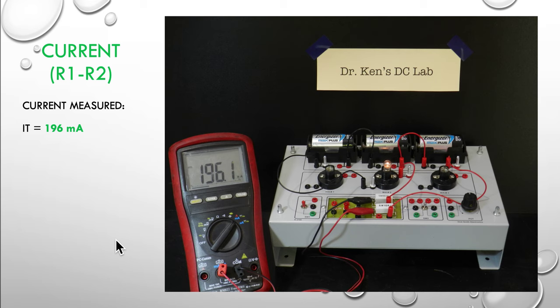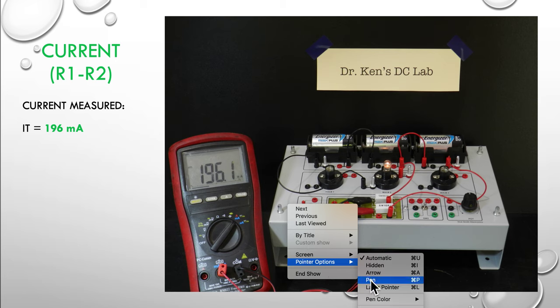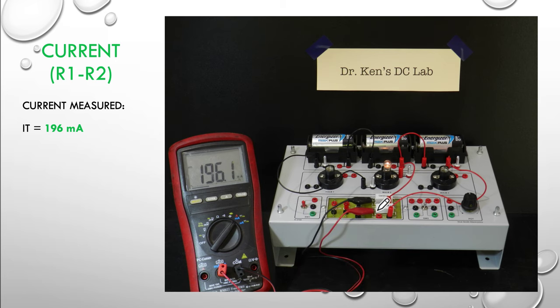Again, the next step: you can see I've moved the ammeter across and we're now measuring in this loop here between the resistors, and we're still getting our 196 milliamps, it hasn't changed. So we got current measured in here at 196, now we're measuring current over here, we're still getting 196, so demonstrating the current has remained the same.